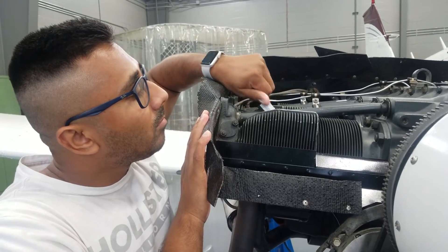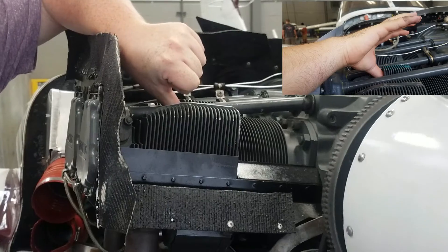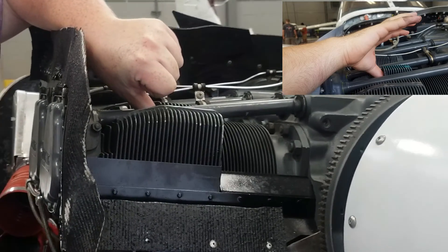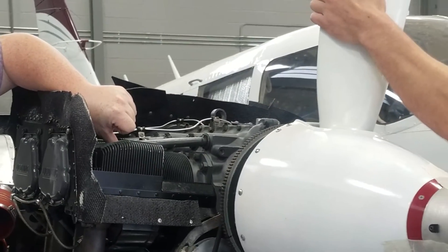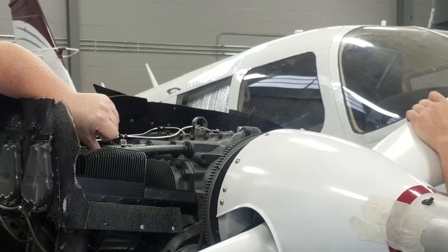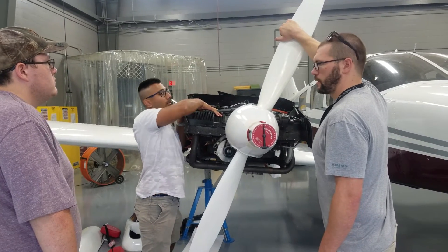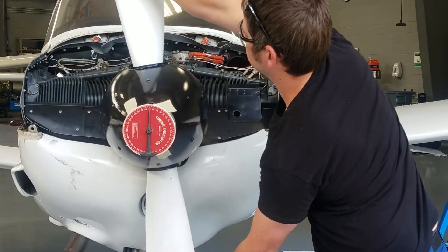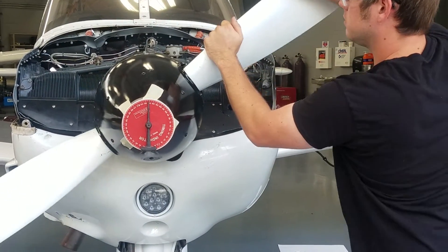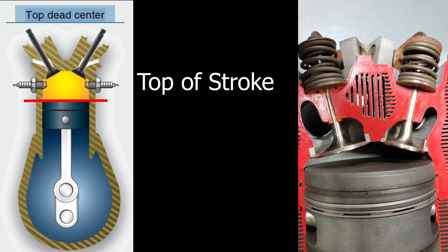Remove the top dead center locator from the cylinder and find the compression stroke on the number one cylinder by placing your finger over the spark plug hole. Turn the propeller in the direction of rotation until you feel the compression building in the cylinder. Remove your thumb quickly to hear the compression release. Continue to turn the propeller in the direction of rotation until the pointer is directly under top center on the indicator. You have now found top dead center on the compression stroke.